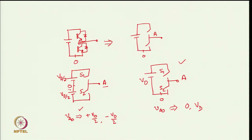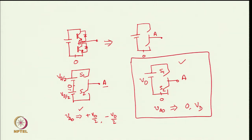This circuit analysis is more close to the real system. So we can use either of them, but in the present analysis we will use this circuit all the time because it is closer to the real system. So VAO is between 0 and Vd — this is what we will assume. However, remember that the analysis with plus Vd/2 and minus Vd/2 is also equally valid.